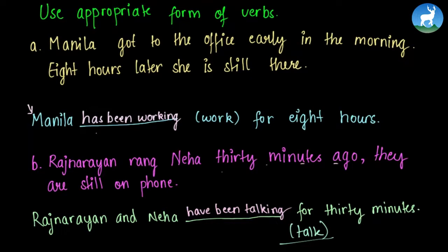Now you can notice, Malina has been working and Raj Narayan and Neha have been talking. Why? Since Malina is a singular noun, we use has. And because here two people are involved, this is plural. This demands us for a plural verb. So Raj Narayan and Neha have been talking for 30 minutes.